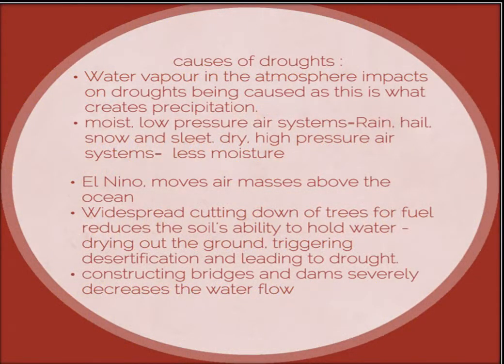Causes of droughts: Water vapour in the atmosphere impacts on droughts being caused, as this is what creates precipitation. Moist low-pressure air systems produce rain, hail, snow, and sleet. Dry high-pressure air systems carry less moisture. El Niño moves air masses above the ocean.